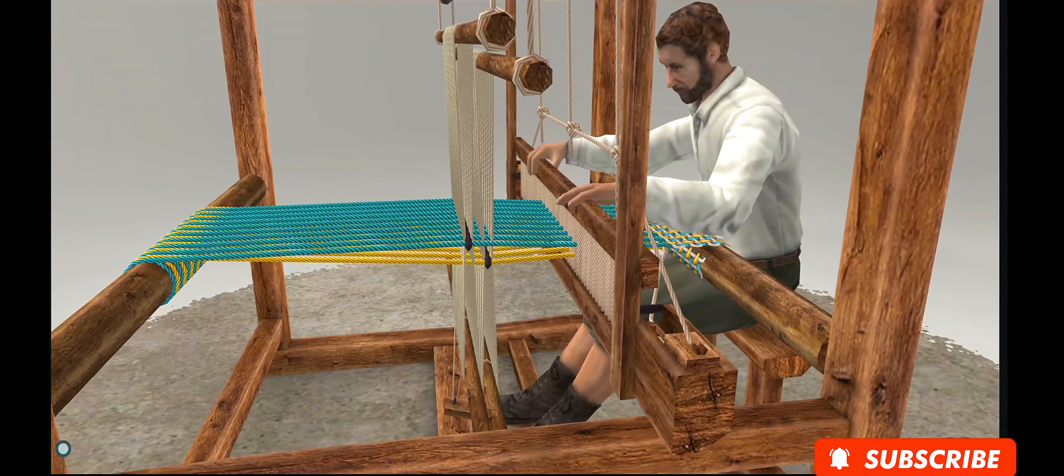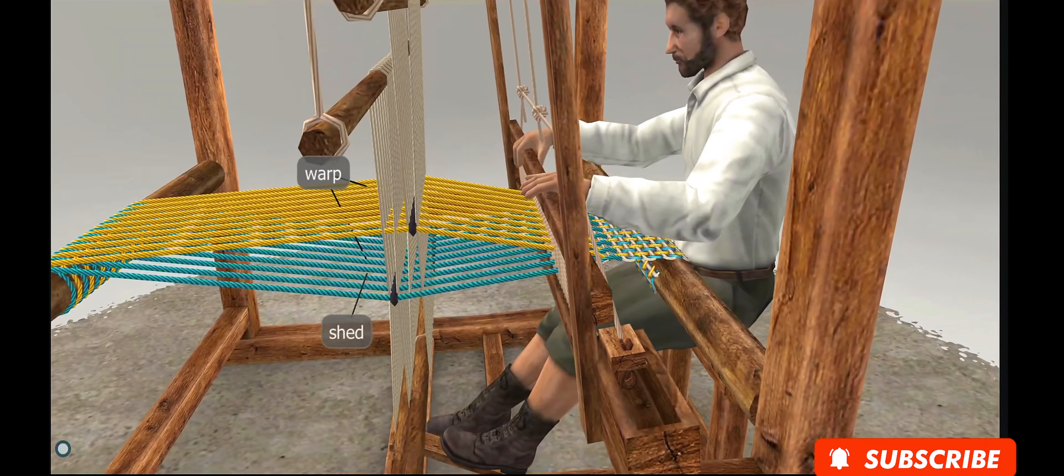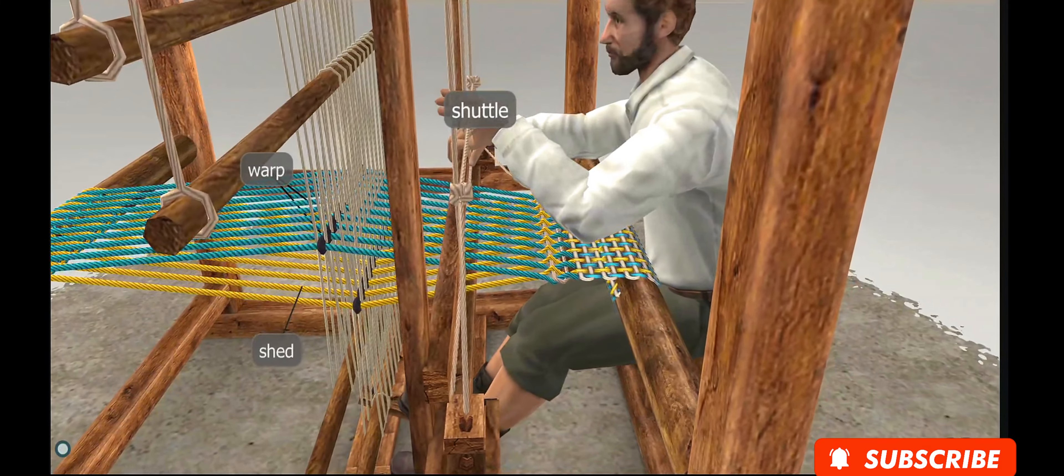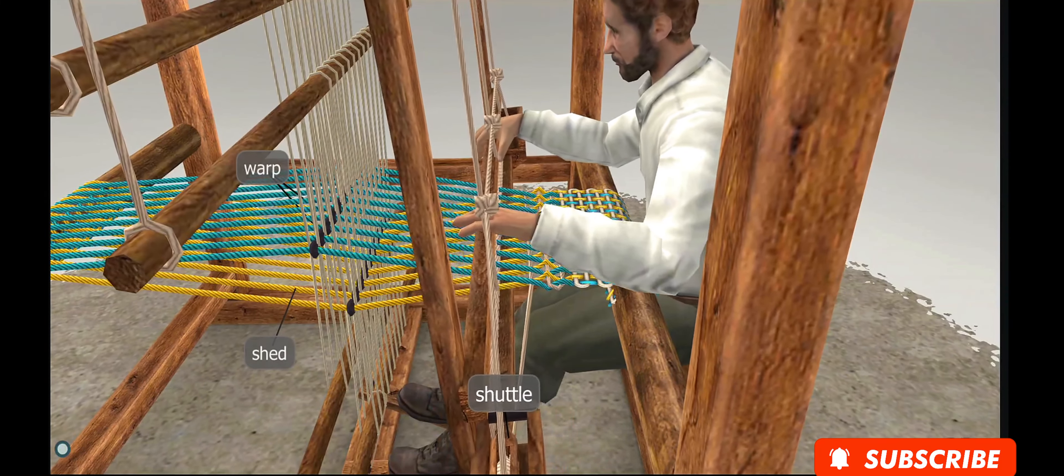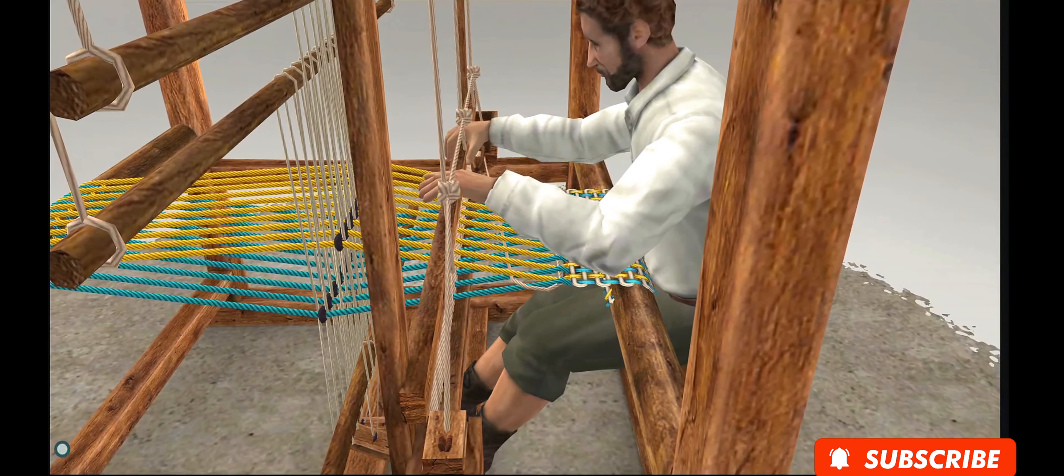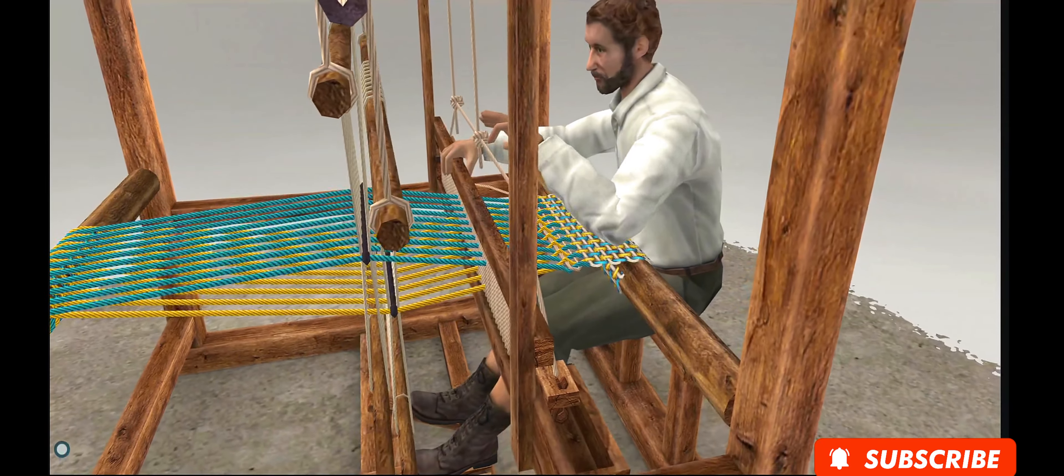Weaving machines produce fabric from yarn. The key to this process is the passing of the shuttle back and forth through the shed, between the yarn threads of the warp, in order to weave in the weft.